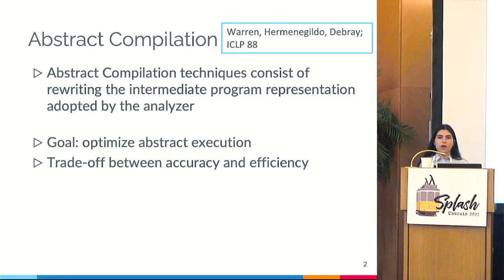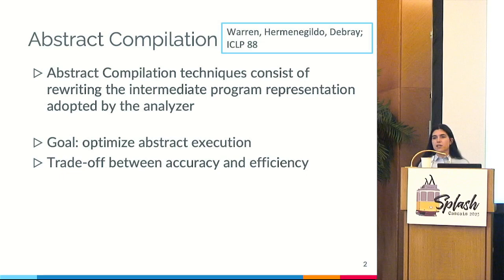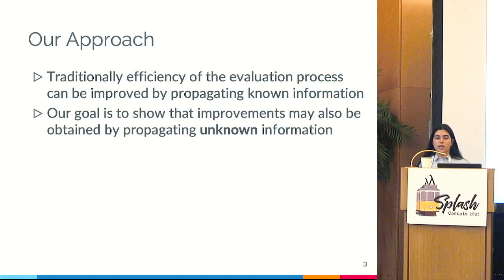Another technique is abstract compilation, which refers to a set of techniques that consist of rewriting the intermediate program representation adopted by the analyzer. The goal is to optimize the abstract execution. We are in a context where there's a trade-off between accuracy and efficiency, targeting efficiency. Traditionally, efficiency of the evaluation process may be improved by propagating known information.